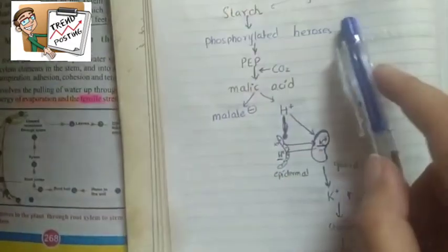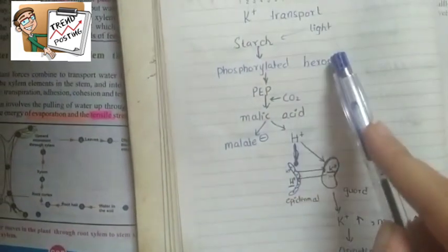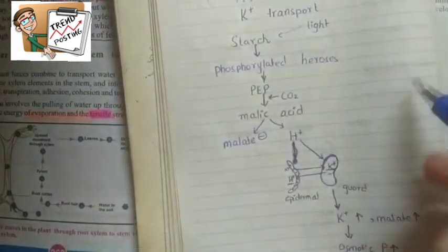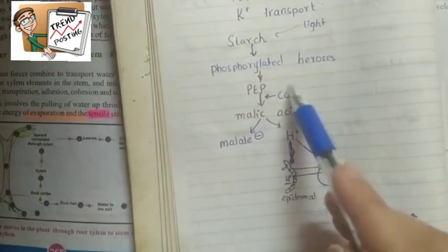Similarly, there's the potassium transport theory. Starch absorbs light and converts to phosphorylated hexoses. These phosphorylated hexoses convert to phosphoenolpyruvic acid.